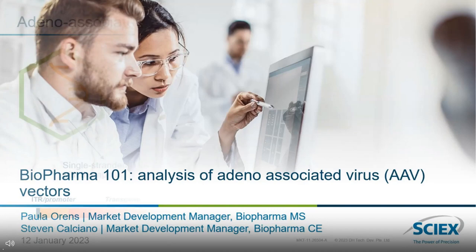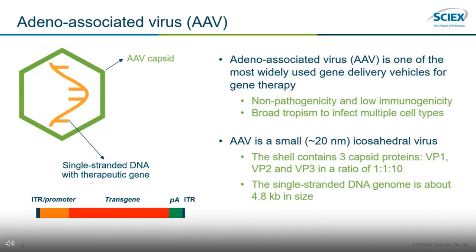Before we dive into the adeno-associated viral vector analysis workflows, let's take a moment to discuss the background of AAV, its components of interest, a typical AAV manufacturing process, as well as its associated analytical challenges. AAV is the short name for adeno-associated virus. It's one of the most widely used delivery vehicles in gene therapy due to its non-pathogenicity, low immunogenicity, and broad tropism to infect multiple cell types. This makes AAV particularly interesting for a variety of genetic disease indications, as the capsid can be tailored toward the specific cell type in vivo.